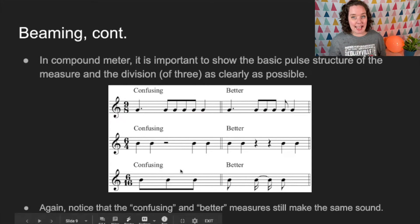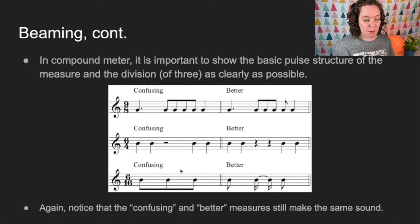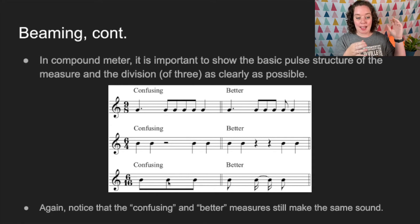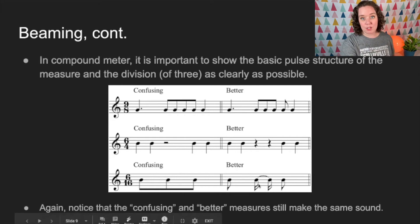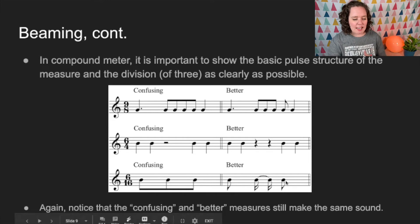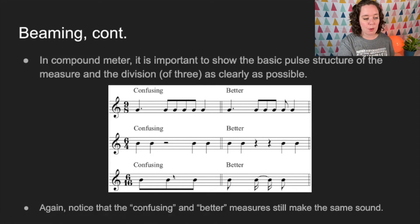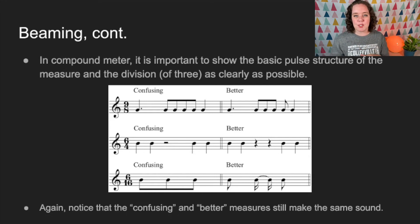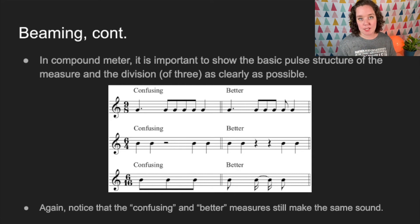In six-sixteen — also a duple meter — three eighth-note pulses make it look like triple meter. To fix this, break apart the center eighth note using a tie: split that middle eighth note into two sixteenths tied together, leaving the eighth note at the end. Both the confusing and corrected versions produce the same sound — it's about splitting or combining things on the page to match the time signature.